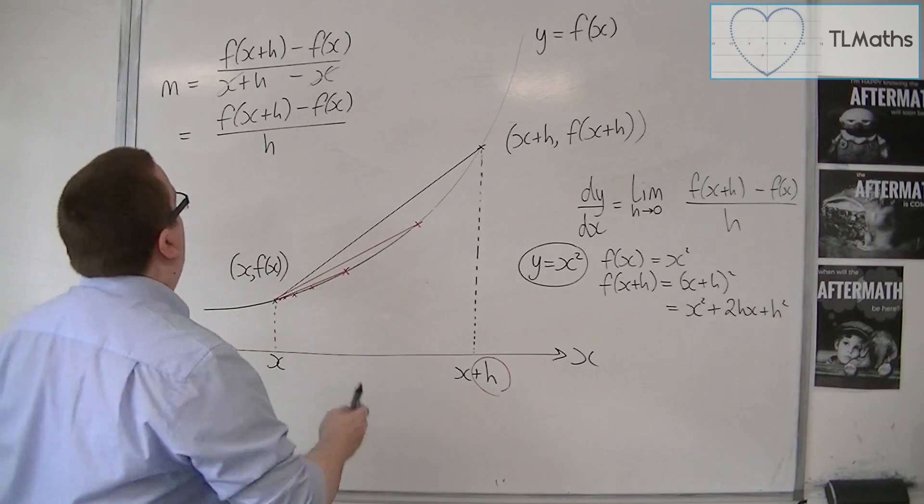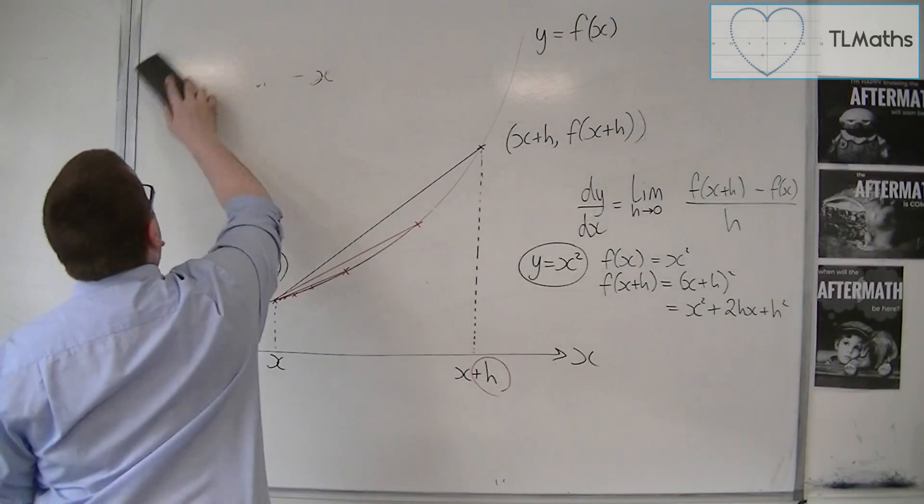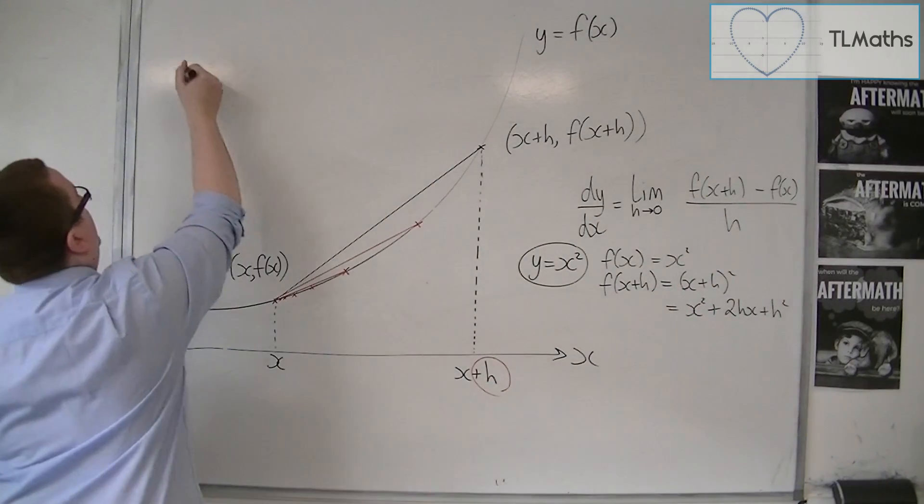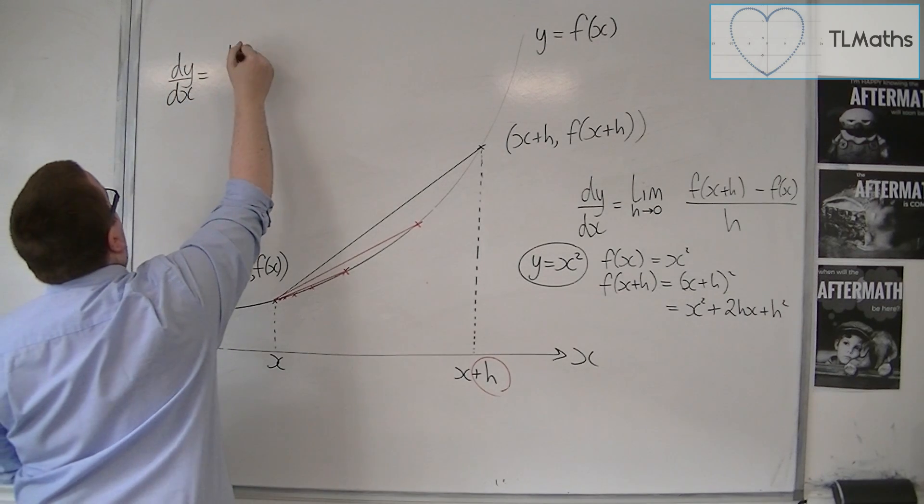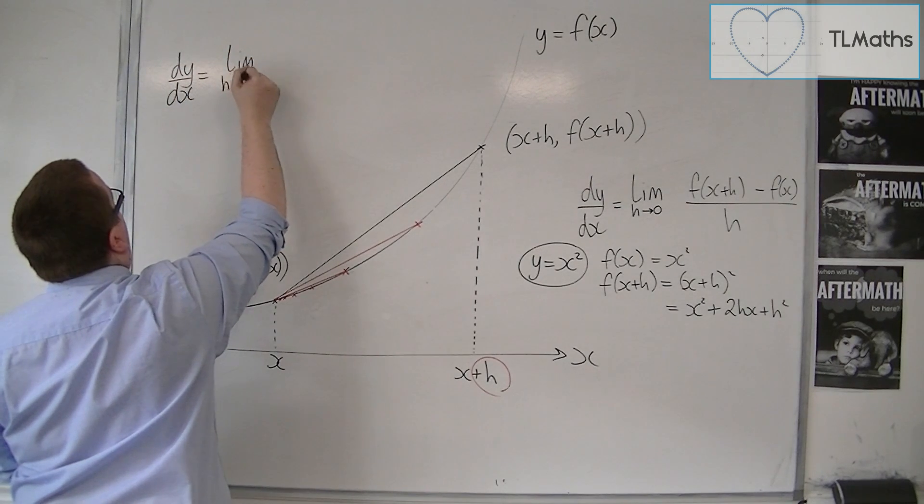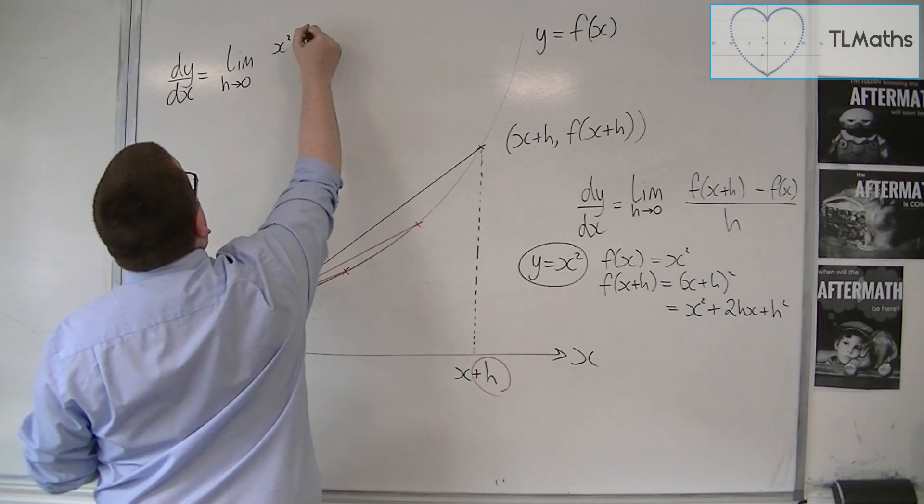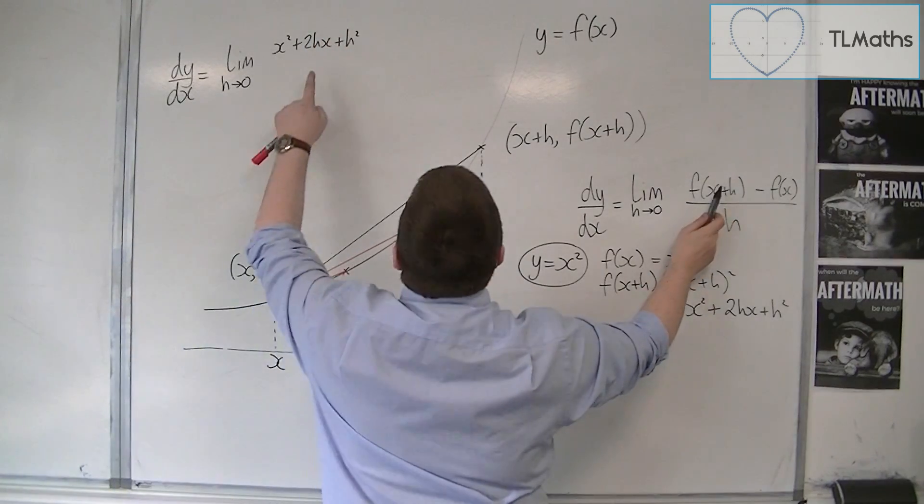So, I now have that dy by dx is equal to the limit as h tends to 0 of f of x plus h, that x squared plus 2hx plus h squared, that's that bit there.